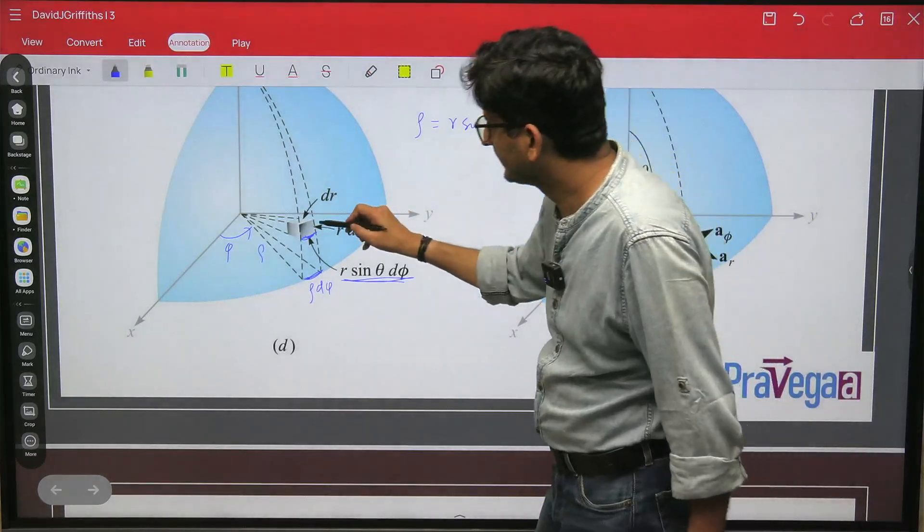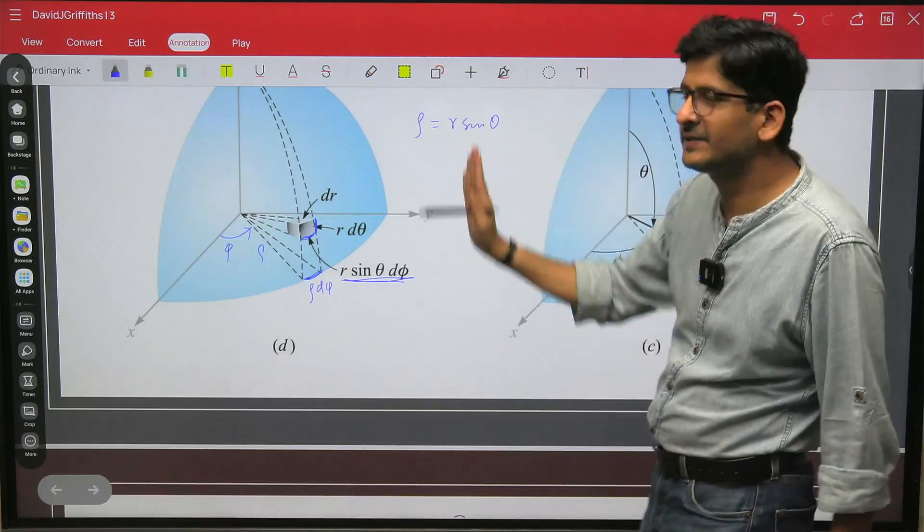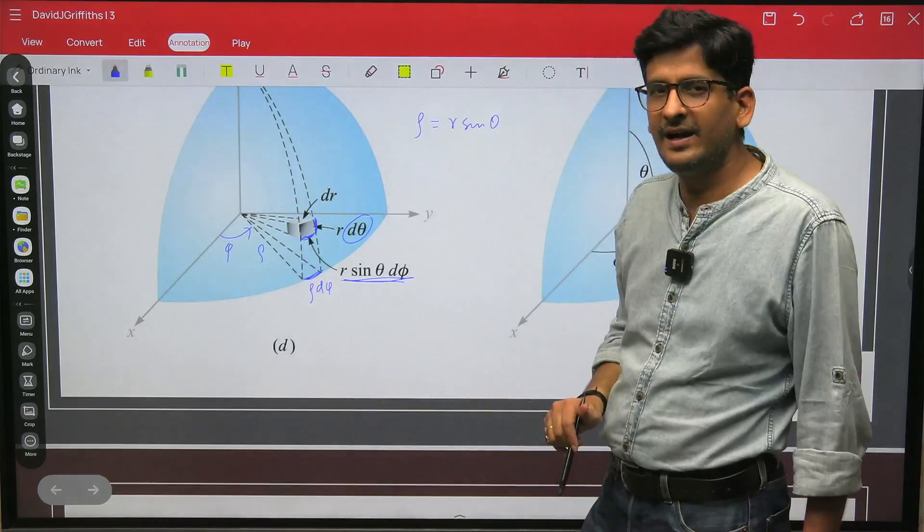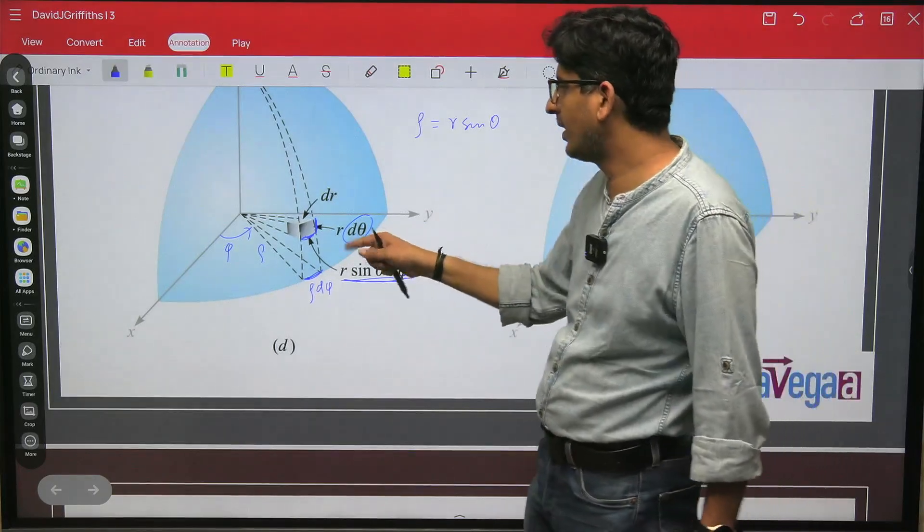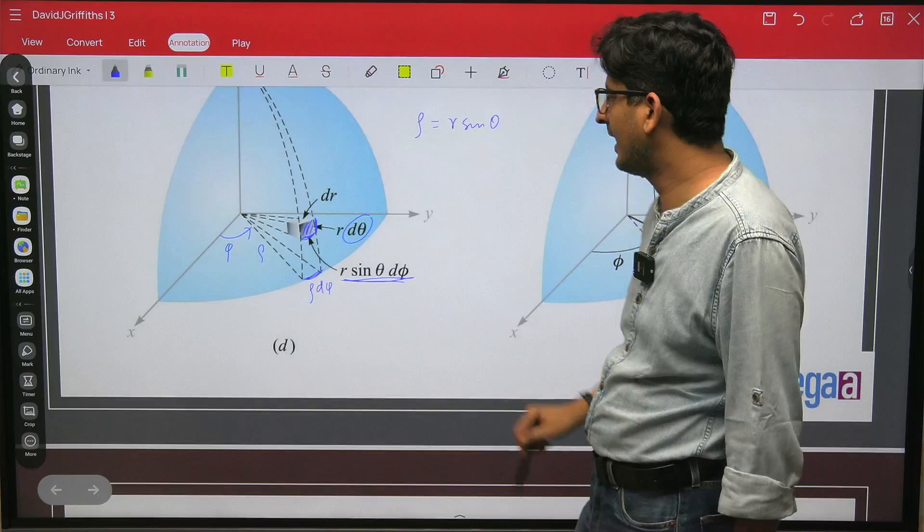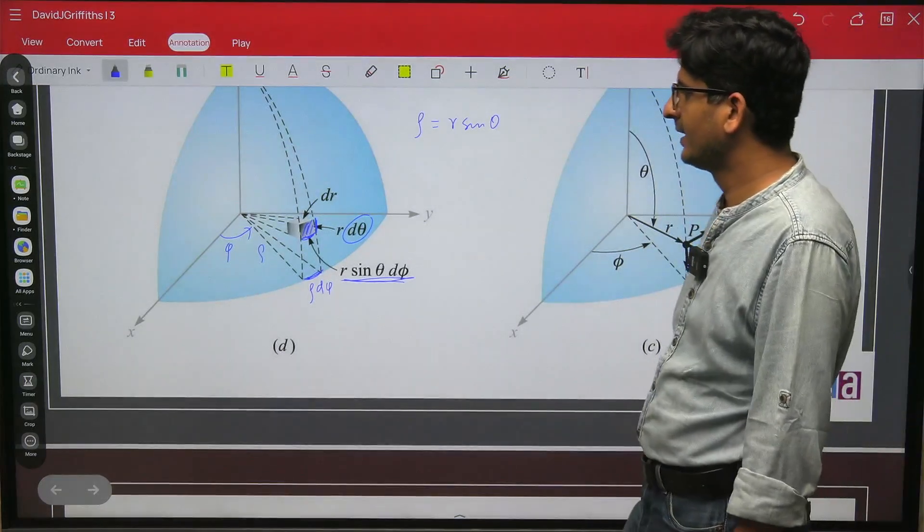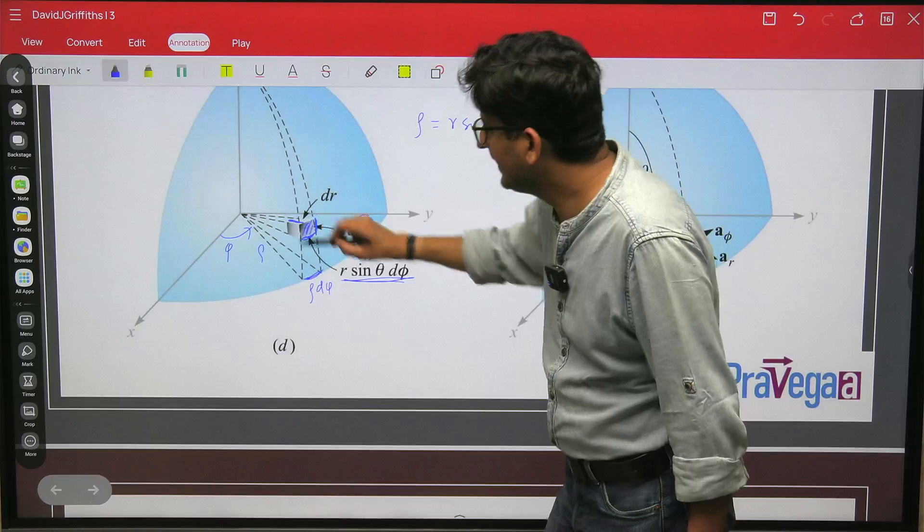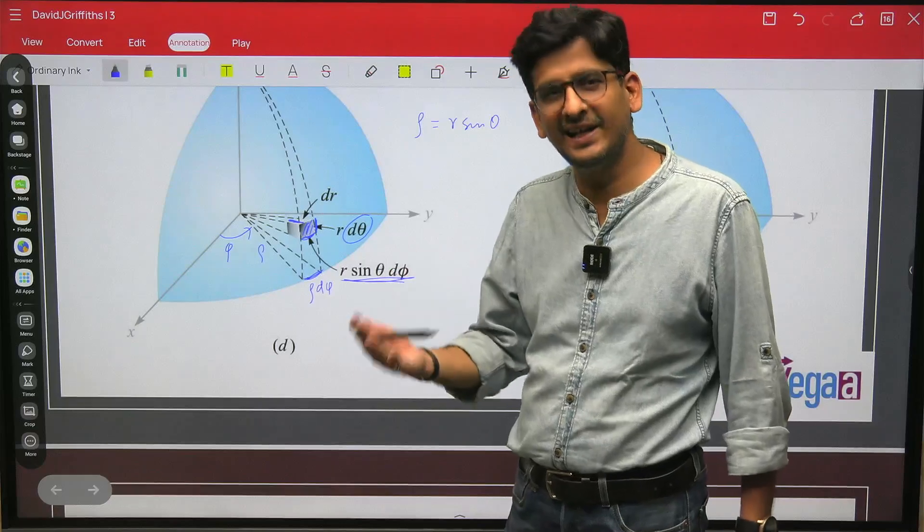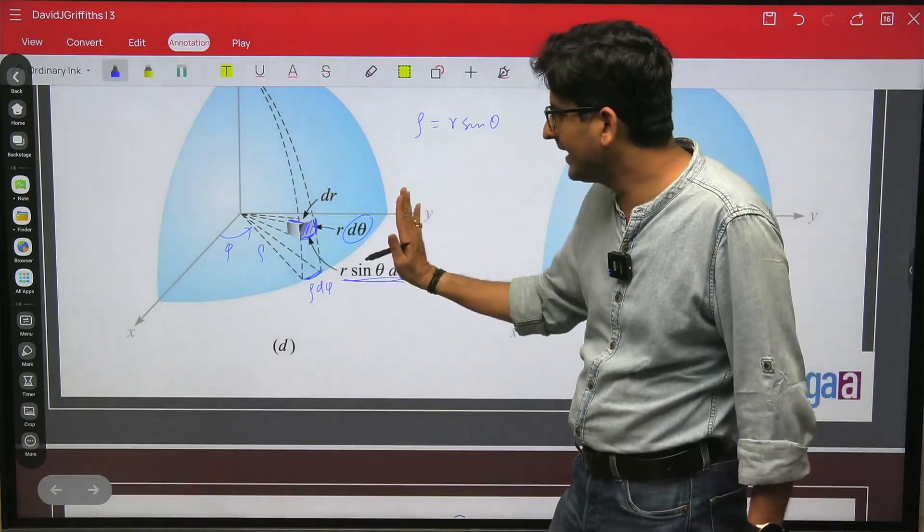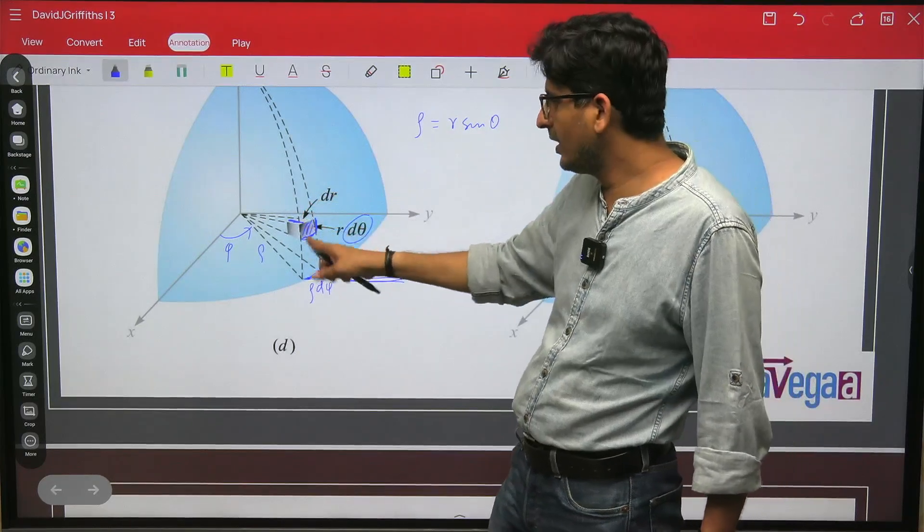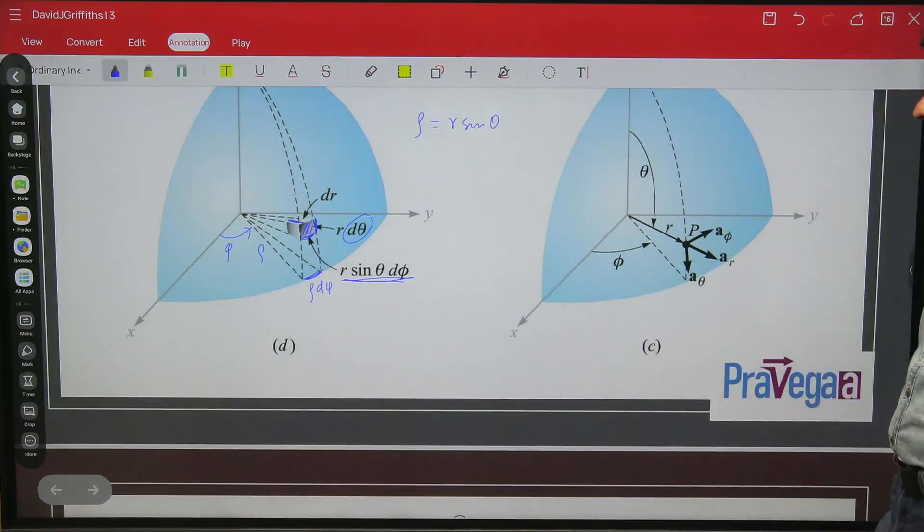Now, what about this? Here what is happening is small displacement is in theta direction. So this will be d theta, and r d theta, because arc is equal to radius into small angle. So this area, small area on the surface, will become product of this and this: r squared sin theta d theta d phi. And this depth is dr. So if you want to calculate the volume, it will become r squared sin theta d theta d phi dr. This area you can calculate by length into breadth. So just go into the detail of this figure, then you will understand everything.